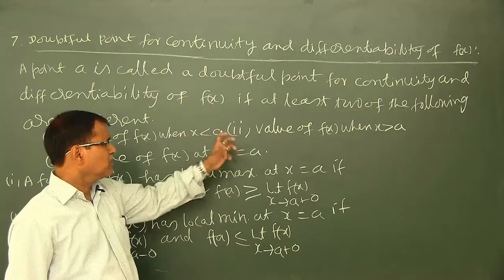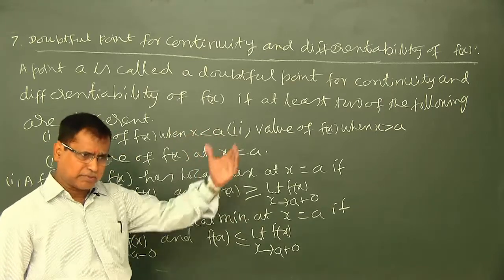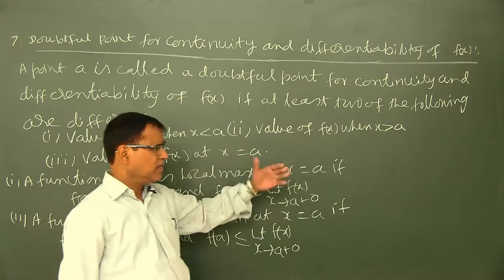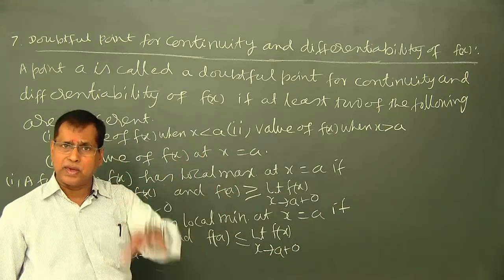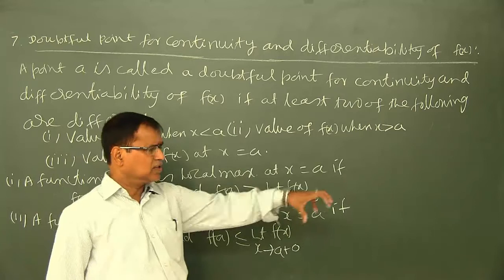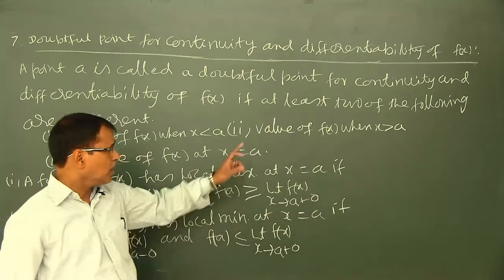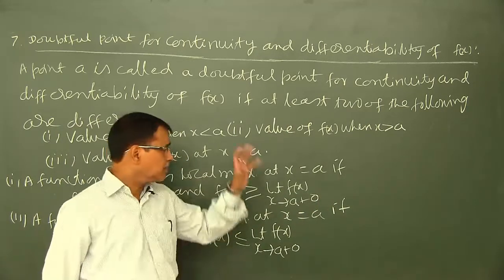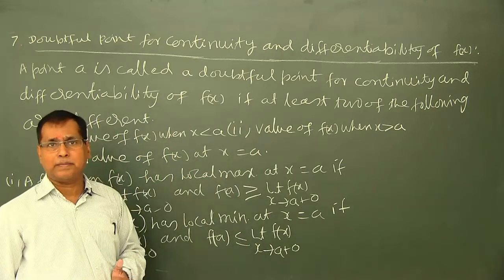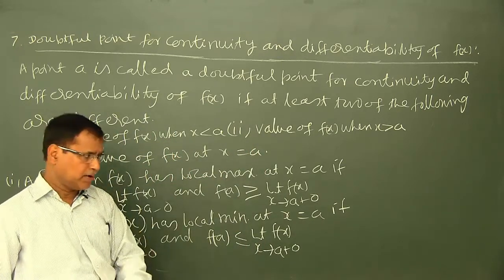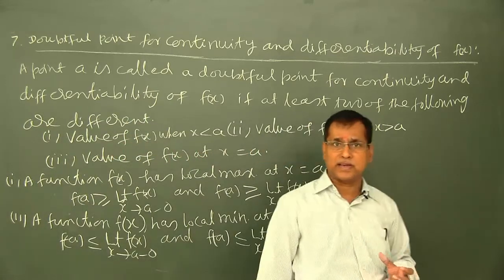اگر A کے left side میں function کا value، A کے right side میں function کا value، اور A پر function کا value — یہ تینوں الگ الگ ہوں یا کم سے کم دو الگ الگ ہوں، دو different ہوں، تو A کو doubtful point for continuity and differentiability کہتے ہیں۔